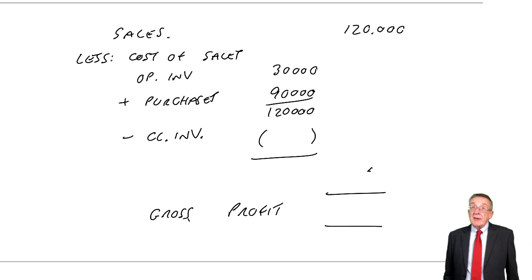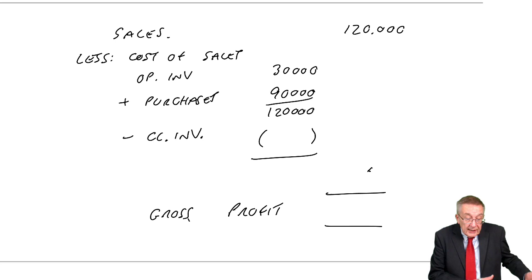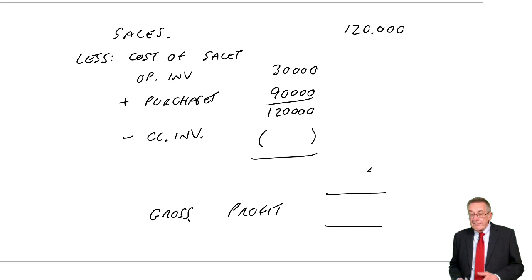Now, I've left the inventory blank, because although it tells us the closing inventory was 12,000, I want to find out what should the inventory have been if there hadn't been a fire. You know, maybe the inventory should have been 15,000. If it's only 12, it means the difference is what was lost in the fire.